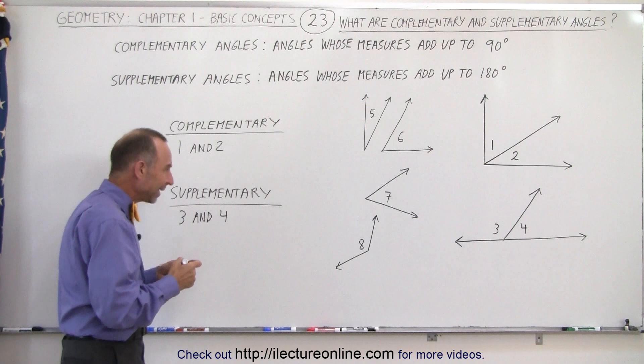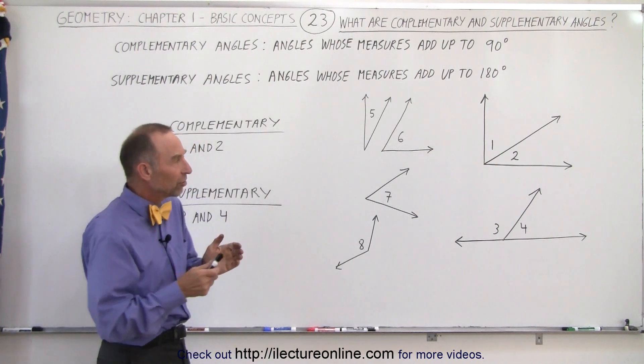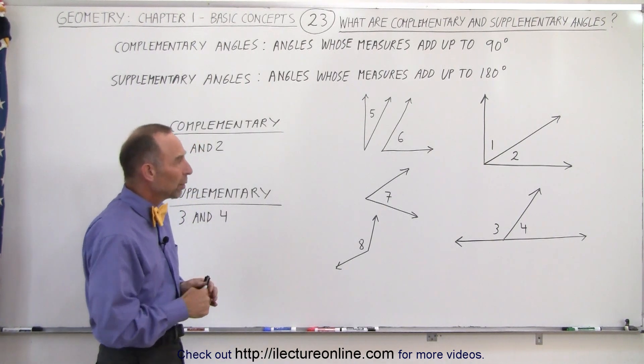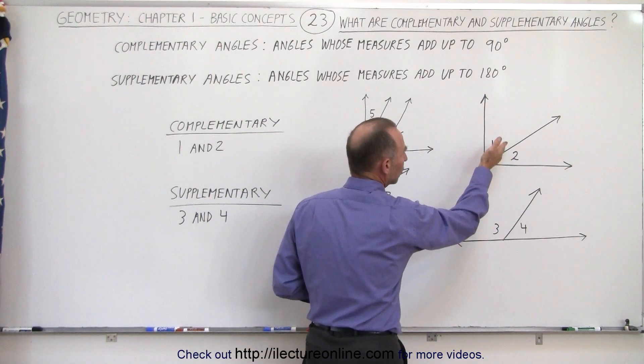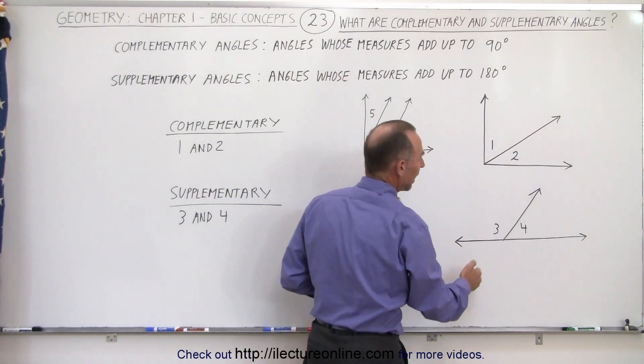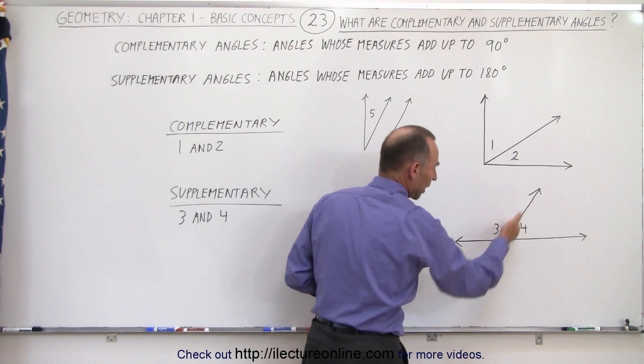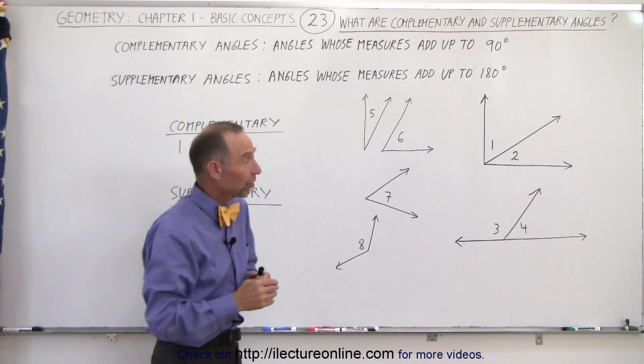But it turns out that the angles do not need to be adjacent. They can be non-adjacent. Here we can see they're adjacent because angles 1 and 2 share a common ray and angles 3 and 4 share a common ray. But they don't have to share a common ray.